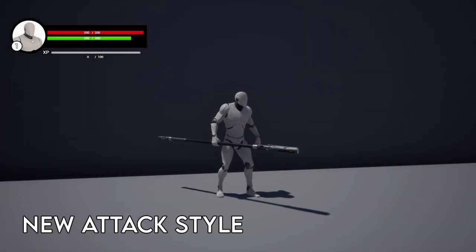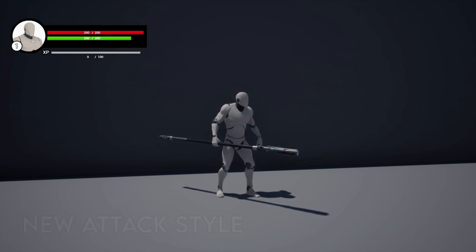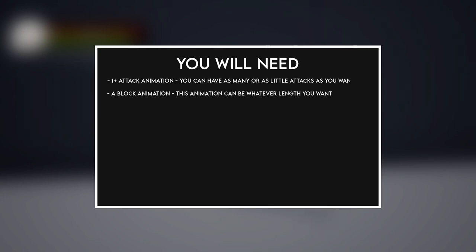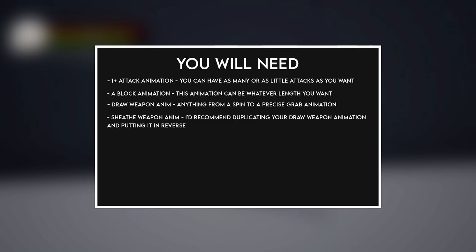Now you've got an idea of how the character works, let's create a new weapon attack style. To add a new weapon attack you'll need: at least one attack animation (you can have as many or as few as you want), a block animation of any length, a draw weapon animation showing the character drawing the weapon, and a sheath weapon animation — I'd recommend duplicating your draw weapon animation in reverse, though you can make a unique one.